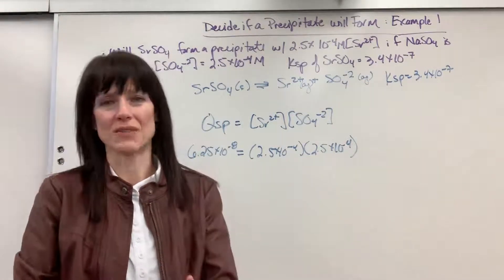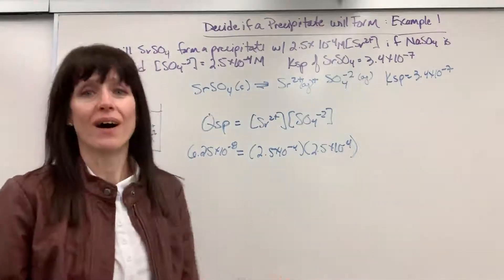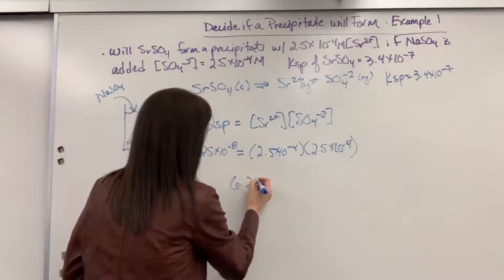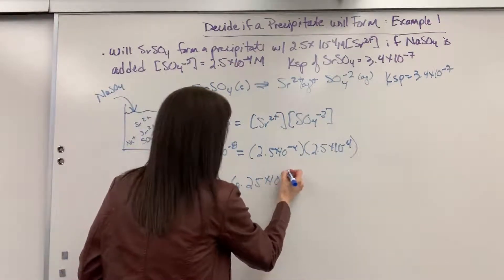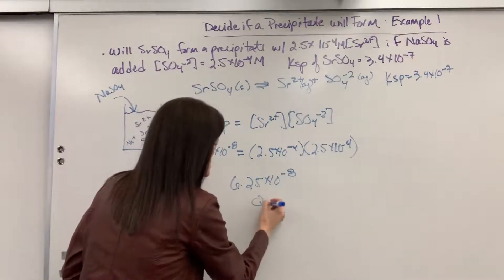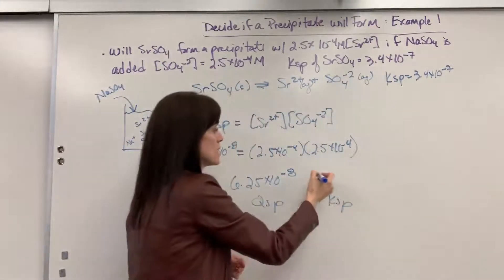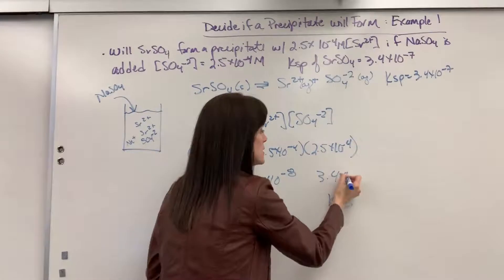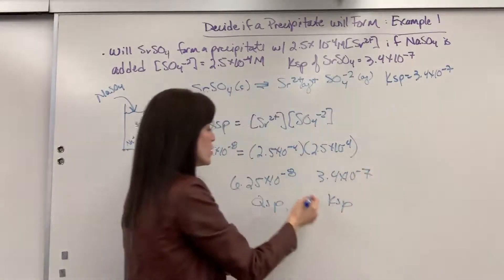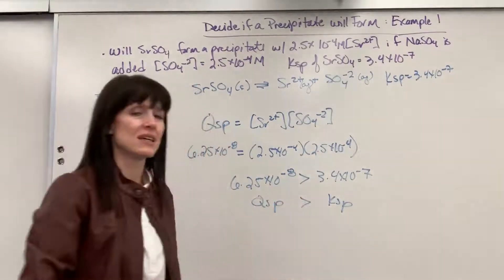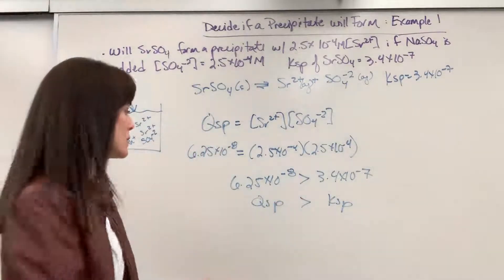That's at this very specific moment. At this point, all we do is compare Qsp and Ksp. So, we are going to have 6.25 times 10 to the minus 8. And this is my Qsp. Let's go ahead and look at Ksp. The Ksp is 3.4 times 10 to the minus 7. Well, this number is smaller. Qsp is less than Ksp.